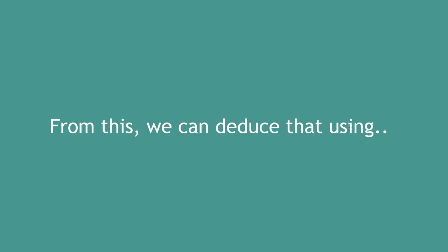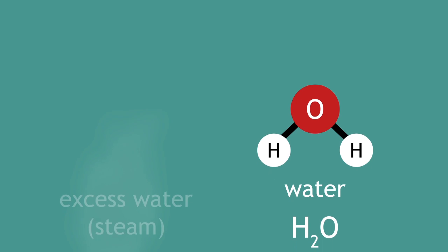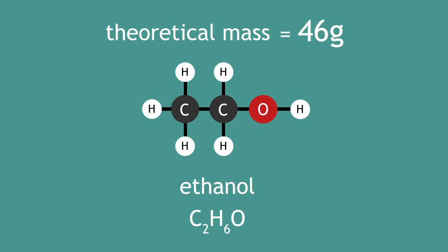From this, we can deduce that using 28 grams of ethene and excess water, the theoretical mass of ethanol formed is 46 grams.